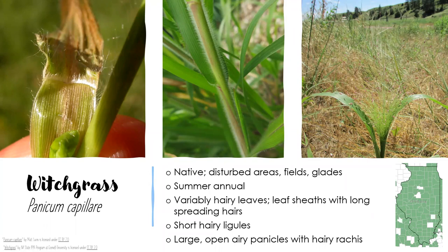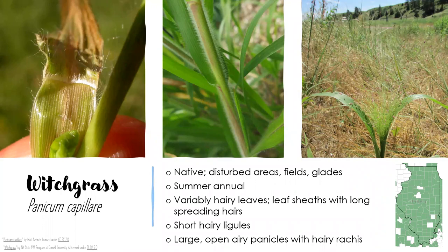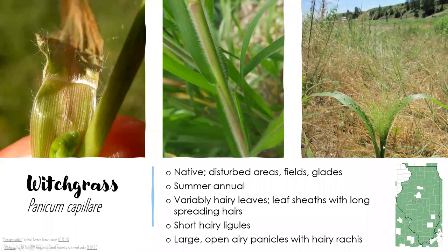We couldn't have a grass ID program called Which Grass is Which without talking about witchgrass — Panicum capillare. We've already identified a few grasses in the Panicum genus. This native grass can grow up to three feet tall but is typically found in disturbed areas, fields, and glades. It's a summer annual, and its leaves vary in their hairiness, but the leaf sheaths always have long spreading hairs. It has short hairy ligules visible in the collar region. And then there's a large open airy panicle with a hairy rachis — this fountain-shaped panicle emerging out of the leaf blades is really typical for witchgrass.